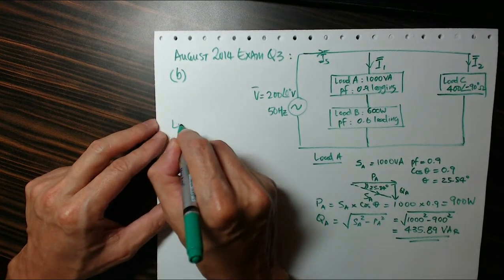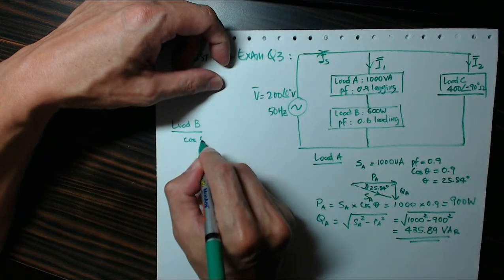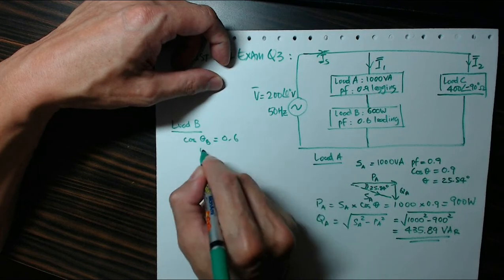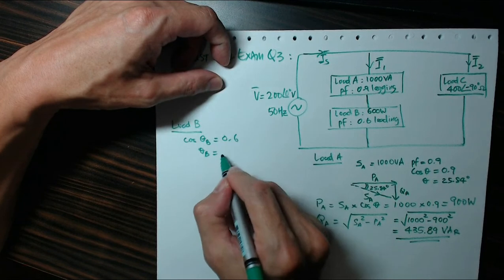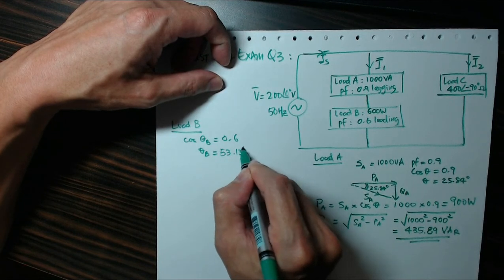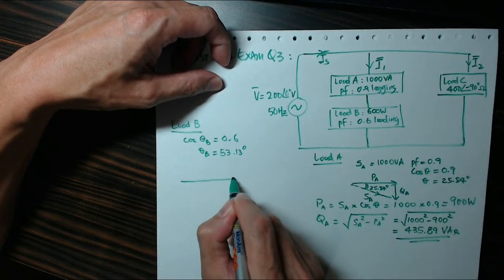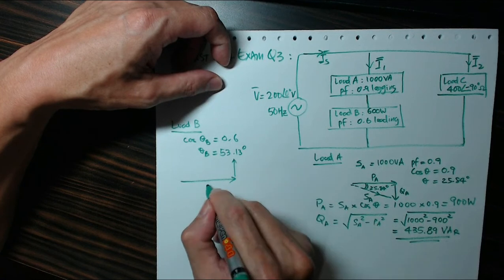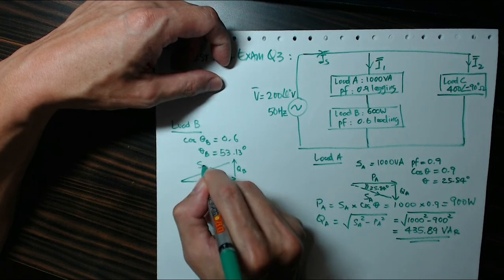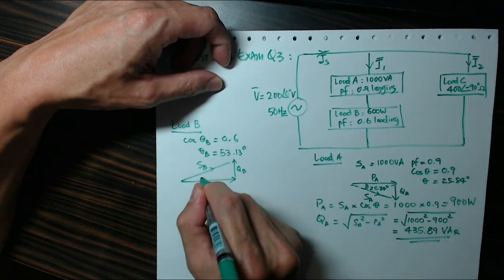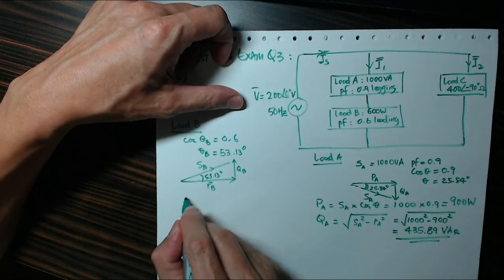Now I look at load B, same approach, but this time the power factor is 0.6, which means the phase angle difference is about 53.13 degrees. Now this time it's leading, so my power triangle will look like this. So this is PB, this is QB, and this is my apparent power SB with an angle of 53.13 degrees.